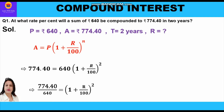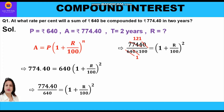Now let us remove the decimal first — we will get 100 in the denominator. So accordingly we shall write 774.40 upon 640 into 100 is equal to 1 plus r upon 100 whole square. Further, the zeros cancel and 774.40 divided by 64 gives 121 in the numerator. So we write 121 upon 100 is equal to 1 plus r upon 100 whole square.